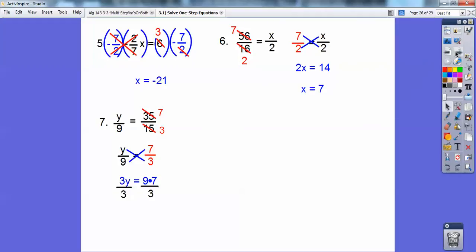And then you can see that 3 goes into 9 three times there. So I'm left with 3 times 7 is 21. All right, good job. All right, good job, you guys.